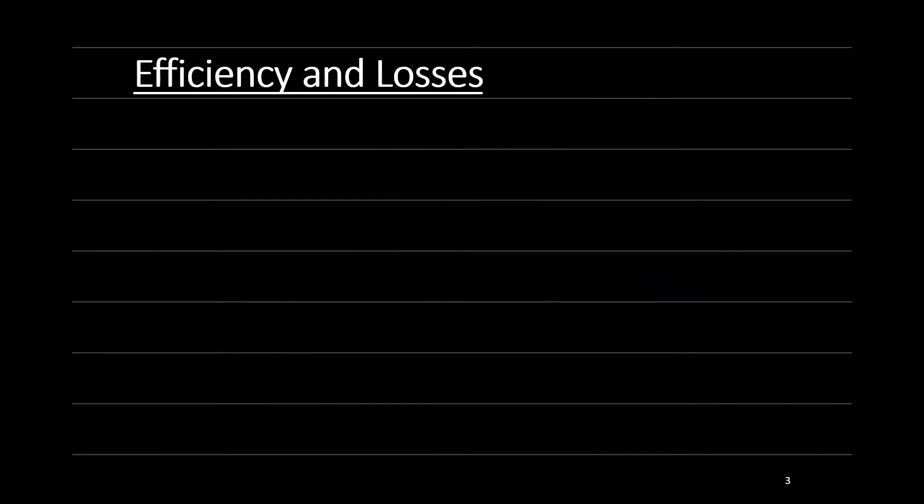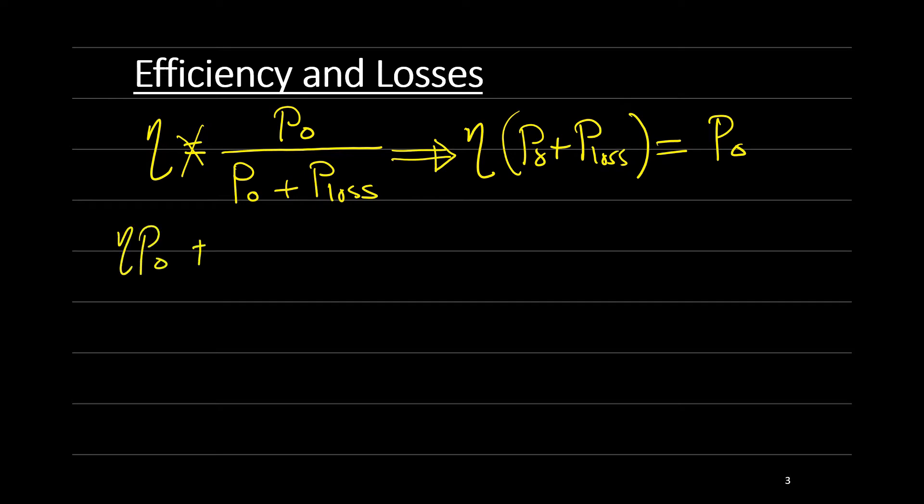Let's redefine this efficiency equation again here. So eta is equal to the output power over the input power, which is the output power plus the power losses. Just try to distribute this. You will find that efficiency times P out plus P loss is equal to P out. So eta P out plus eta P loss is equal to P out.